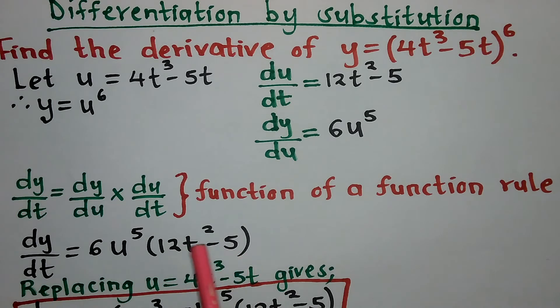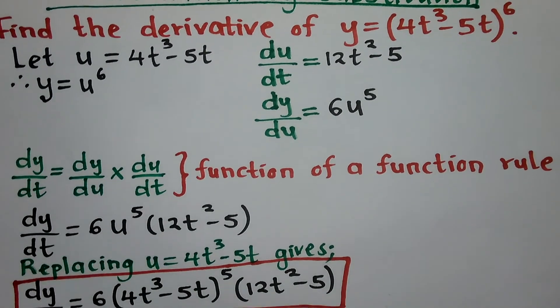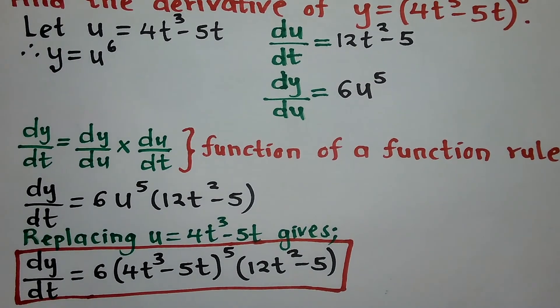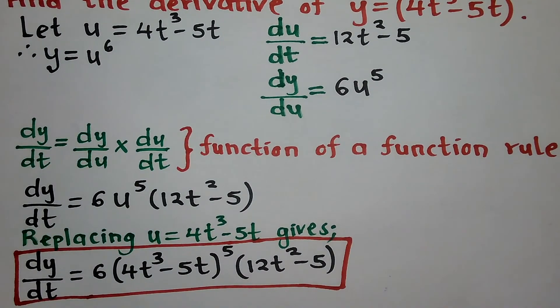We know that u is equivalent to 4t³ - 5t, so what we do is replace our value of u. And that is going to give us 6(4t³ - 5t)⁵ multiplied by 12t² - 5.